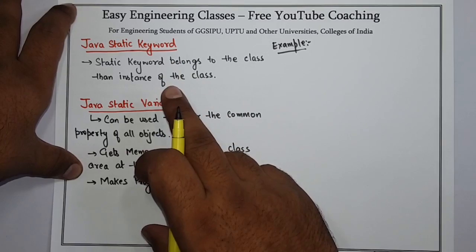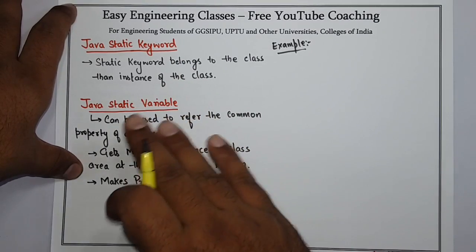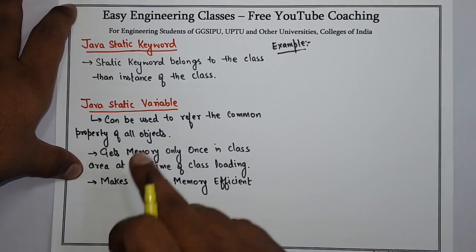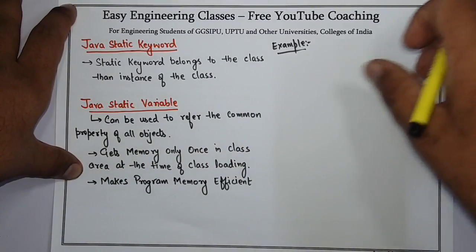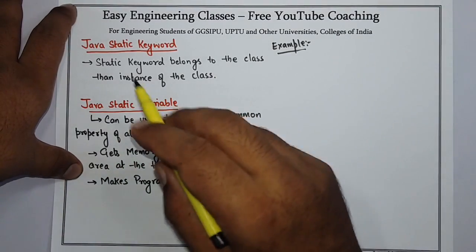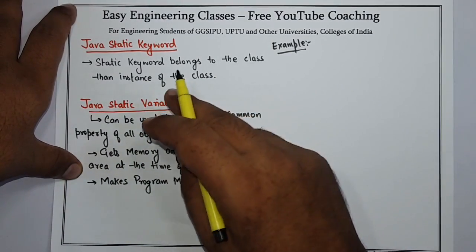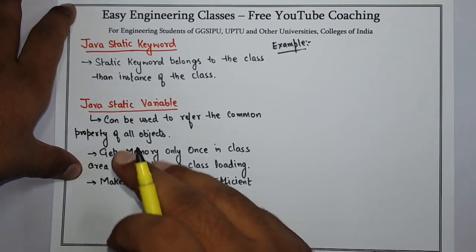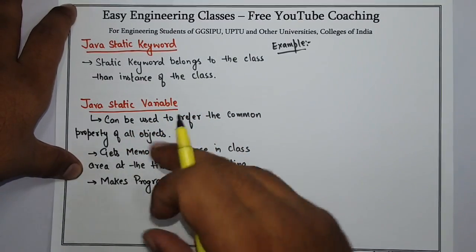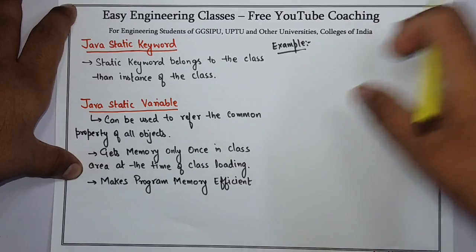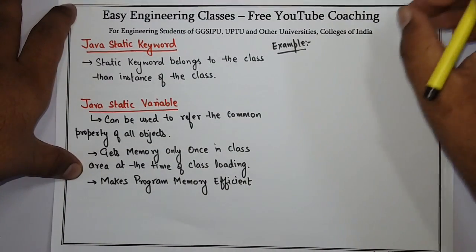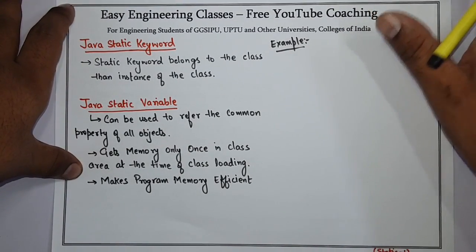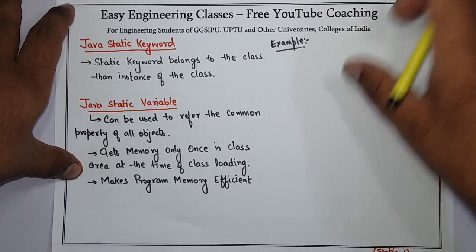Static can be applied with variable, method, blocks and nested class. In this lecture we will see static keyword for variable, method and block. Nested class is a separate topic that comes under inner class, so I will make a video of inner classes separately.